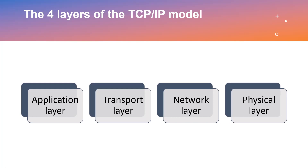The network layer, also called the internet layer, deals with packets and connects independent networks to transport the packets across network boundaries. The network layer protocols are IP and Internet Control Message Protocol (ICMP), which is used for error reporting. The physical layer, also known as the network interface layer or data link layer, consists of protocols that operate only on a link — the network component that interconnects nodes or hosts into the network. The protocols in this lowest layer include Ethernet for local area networks and Address Resolution Protocol (ARP).